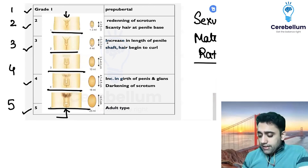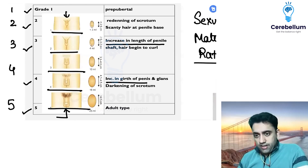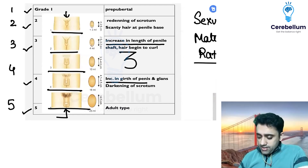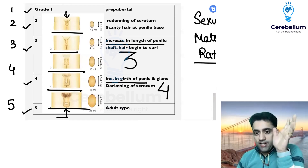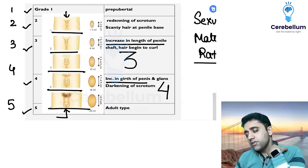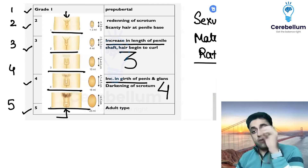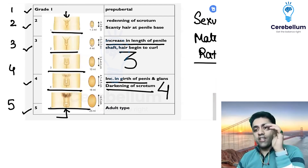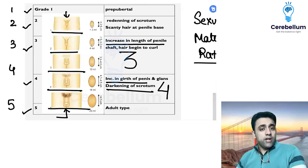In which stage of SMR is there an increase in the length of the penis, and in which stage is there an increase in the width (girth) of the penis? These are important exam questions. In stage three SMR there is an increase in the length of the penis, whereas in stage four SMR there is an increase in the girth of the penis. Also, darkening of the scrotum is seen in stage four SMR. These three MCQs are important for INICET as well as for NEET PG.